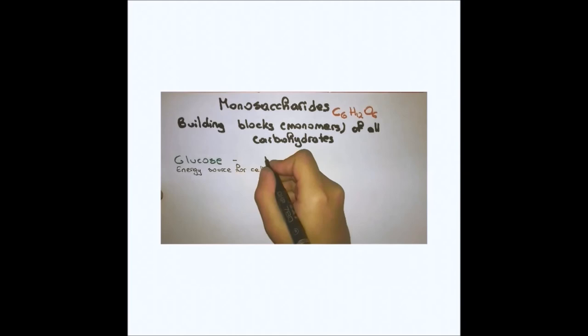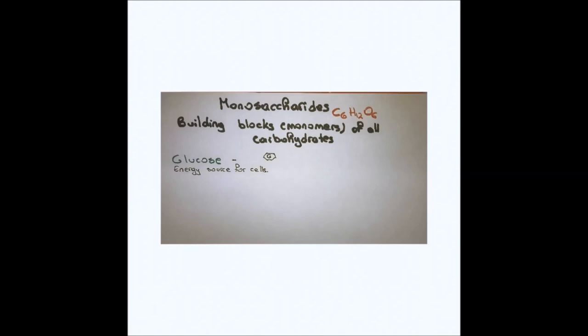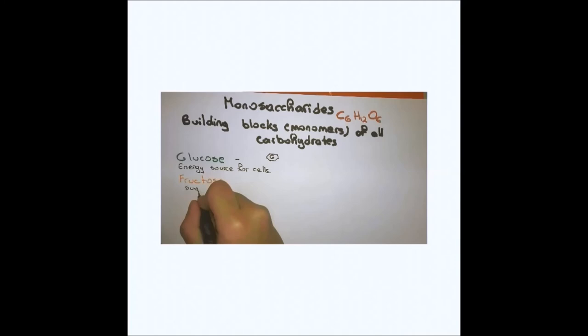Another monosaccharide called fructose is the primary monosaccharide found in fruits and plants, and galactose is the primary monosaccharide found in milk.